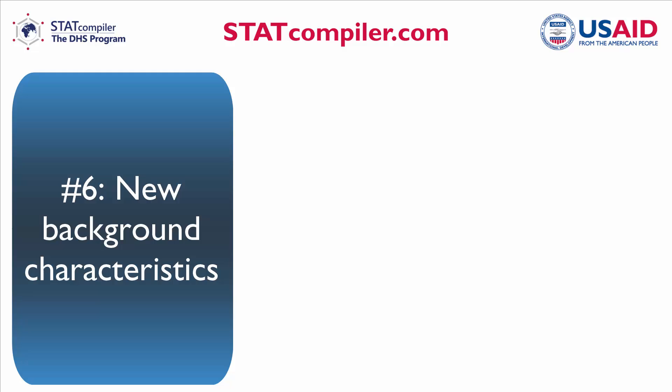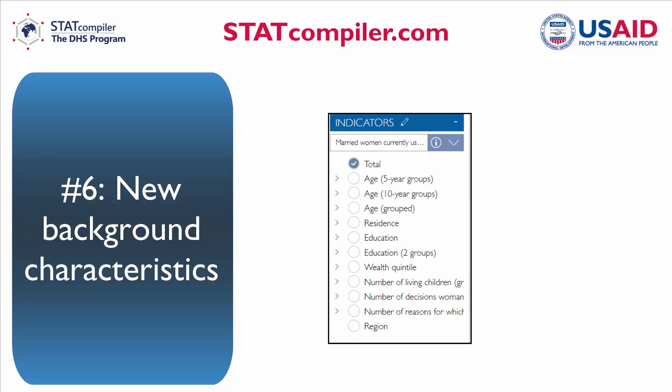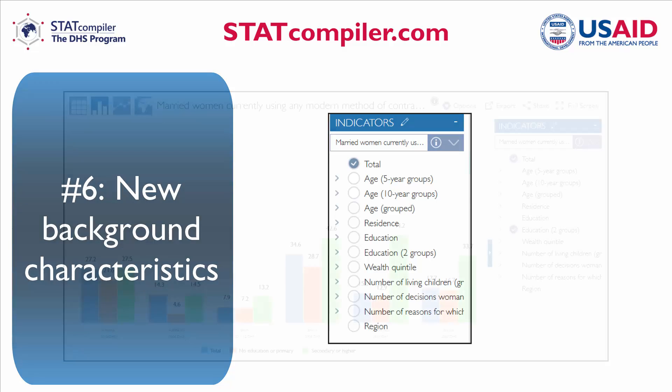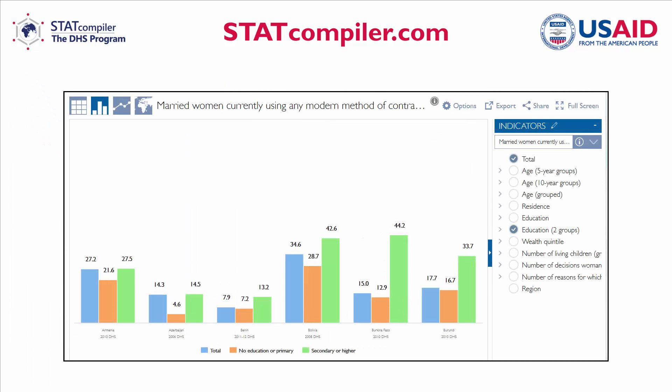Number 6. We have added several new background characteristics, including different age groups, a new education category, and some indicator-specific options.